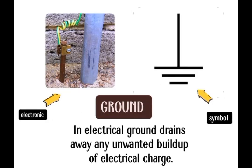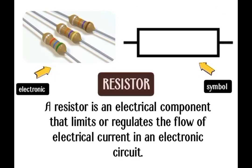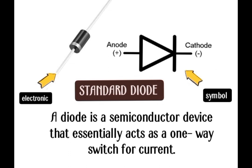Ground: In electrical systems, ground drains away any unwanted build-up of electrical charge. Resistor: A resistor is an electrical component that limits or regulates the flow of electrical current in an electronic circuit. Standard Diode: A diode is a semiconductor device that essentially acts as a one-way switch for current.